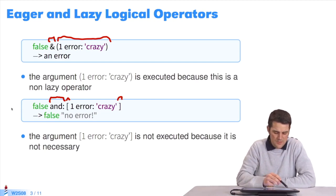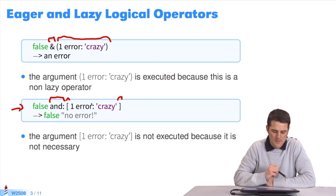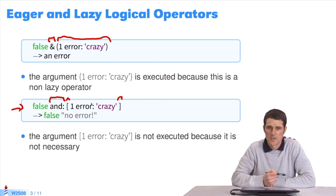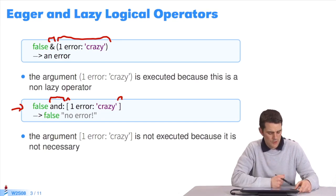In the second example, you have false and a block. It returns false without evaluating the block passed as a parameter. It is a typical lazy operator, but built using blocks.